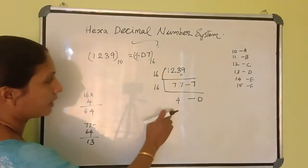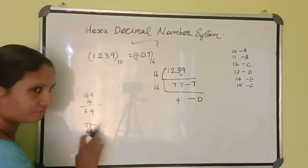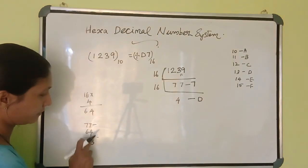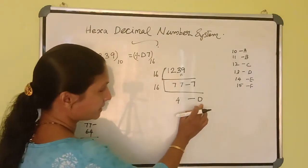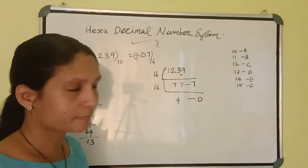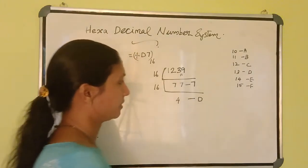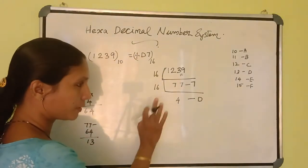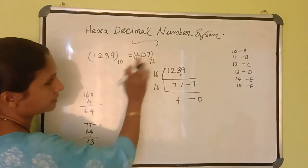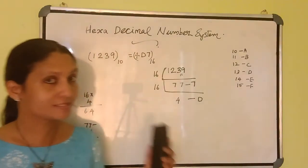The last remainder: 4 times it will go, and 16 into 4 gives 64. Then you just subtract, and you get 13 as a remainder. But you can't write 13 because that is a decimal number, so you take the equivalent alphabet and write D here. If the number is less than 16, you can stop there. Then write the answer: 4, D, 7. This is the equivalent hexadecimal number of the decimal number 1239.